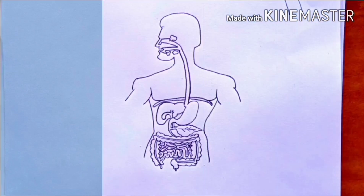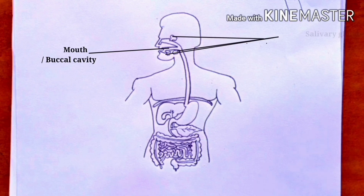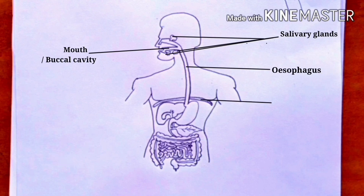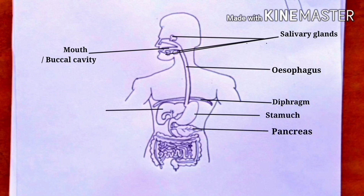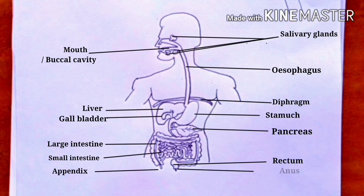Now labeling this diagram. This is the mouth, also known as the buccal cavity. This is the salivary glands. This is the esophagus. This is the diaphragm. This is the stomach. Next one is the pancreas. This is the liver. This is the gallbladder. This is the large intestine and this is the small intestine. This is the appendix. This is the rectum. And finally, this is called the anus.